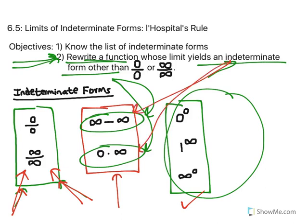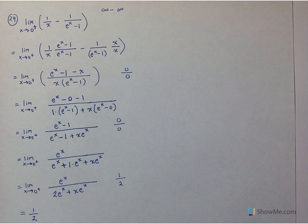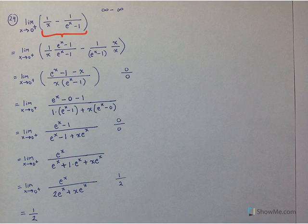We're going to look at an example where, when we try direct substitution, we get ∞ - ∞, so we'll have to rewrite the function until we get one of the 2 indeterminate forms we can use with L'Hôpital's Rule. Problem 29: find the limit of (1/x - 1/(e^x - 1)) as x approaches 0 from the right.